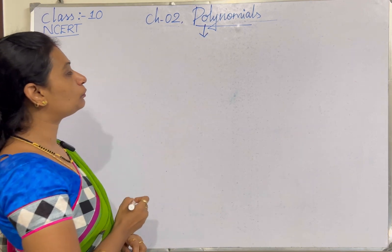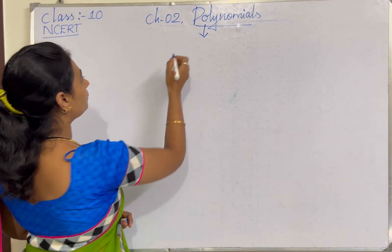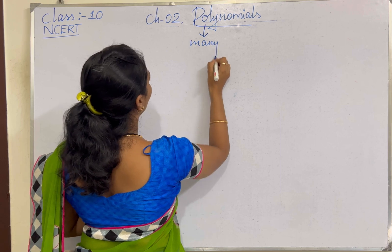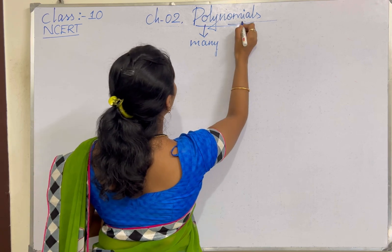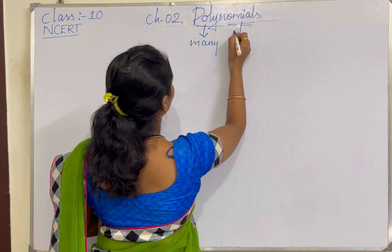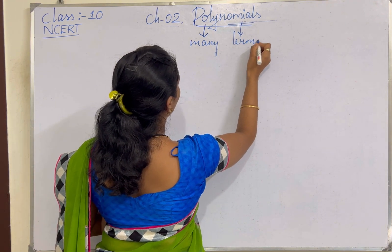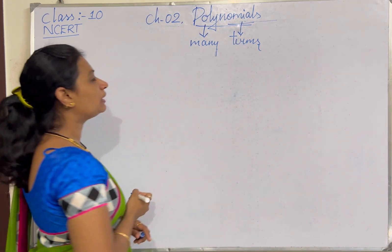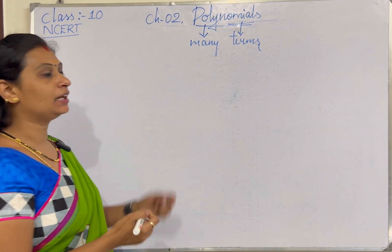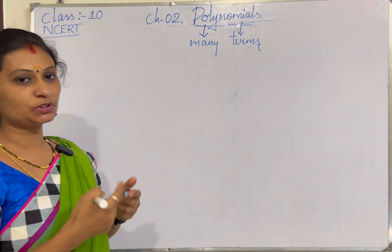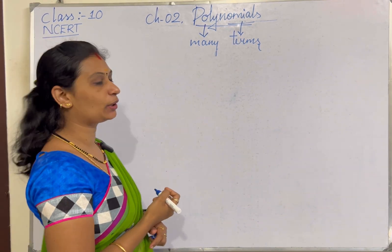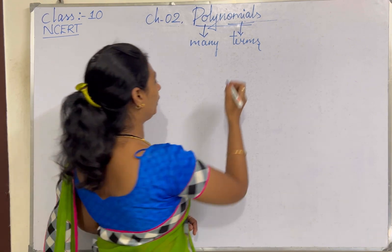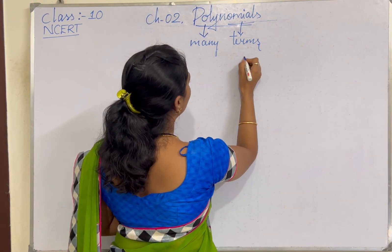The word 'poly' means many, and 'nominal' means terms. In general, a polynomial is nothing but many terms connected with either plus or minus, forming a polynomial expression.